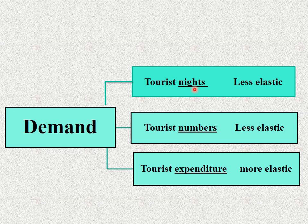ليه ممكن النامبرز يتغير؟ لأن ممكن حسيت معايا فلوس، فبدل ما بصيف أسبوع ممكن أمد الإجازة عشر أيام. وبعد ما كانت فلوسنا بالكاد بتكفينا إحنا الأربع، دلوقتي ممكن أخد ماما أو حمايتي، فممكن العدد يزيد. ده احتمال بس مش بمعدل كبير. اللي أكيد هيتغير وهيبقى أكتر elasticity هو الـ expenditure، لأن أنا مش هروح جمصة anymore، أنا رايح الجونة.